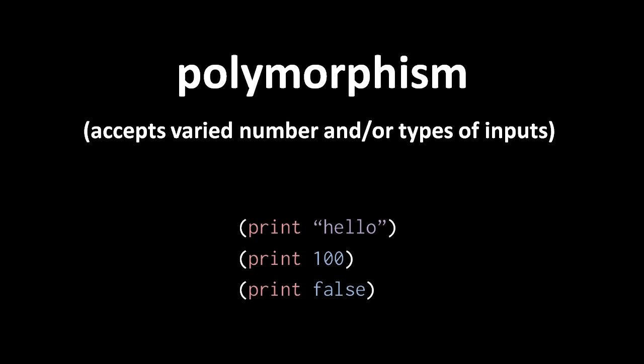You can pass a string, a number, or a boolean, and whatever you pass, the print operator will print a text representation of that value on the console. In the case of print, the operator does basically the same thing no matter the type of input. But in principle, a polymorphic operation or function can do totally different things depending upon the number and or types of inputs.